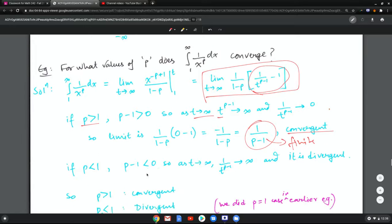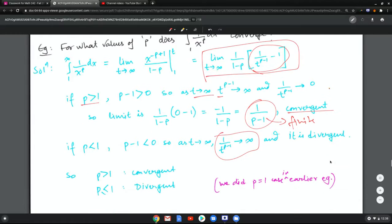If p is less than 1, then it's negative, so this goes to infinity and so it is divergent.